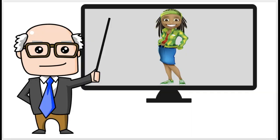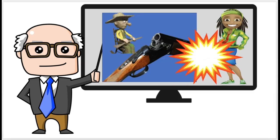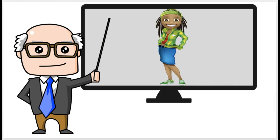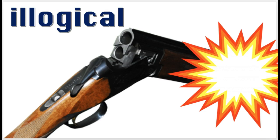Notice that Cindy argues that Jasper was certain his gun was unloaded when it went off. Therefore, unloaded guns can shoot. However, the conclusion logically implied by Cindy's premise is that people can be mistaken about whether or not a gun is loaded.